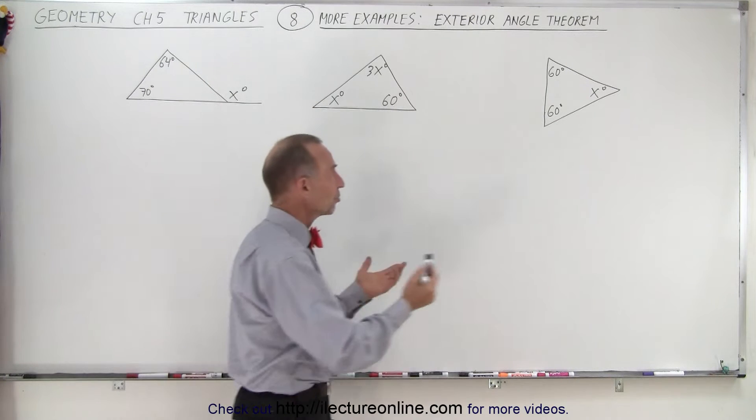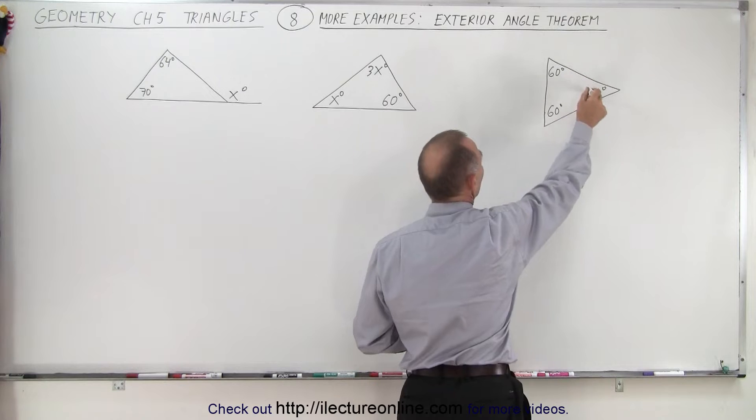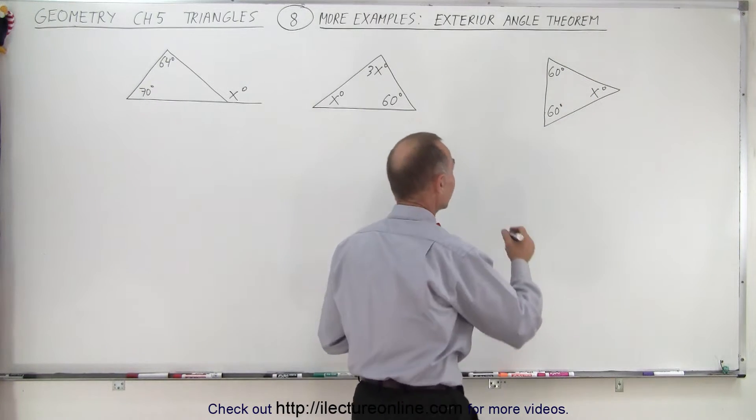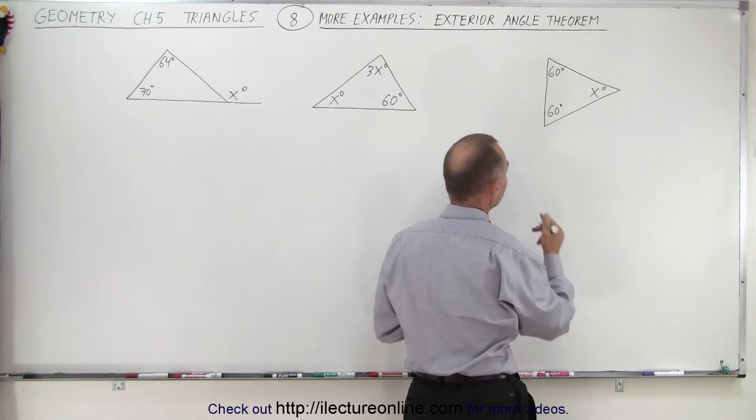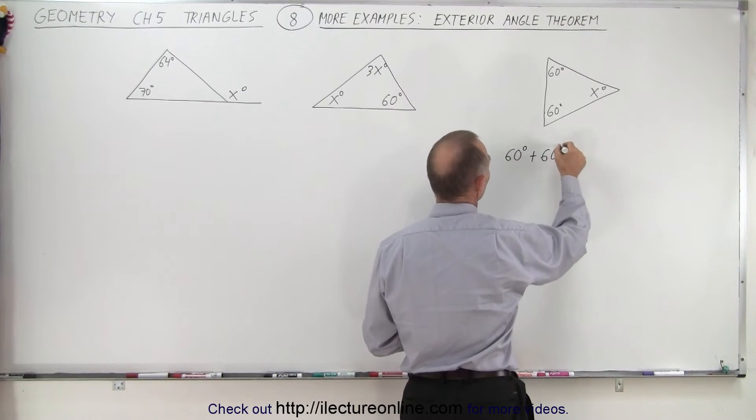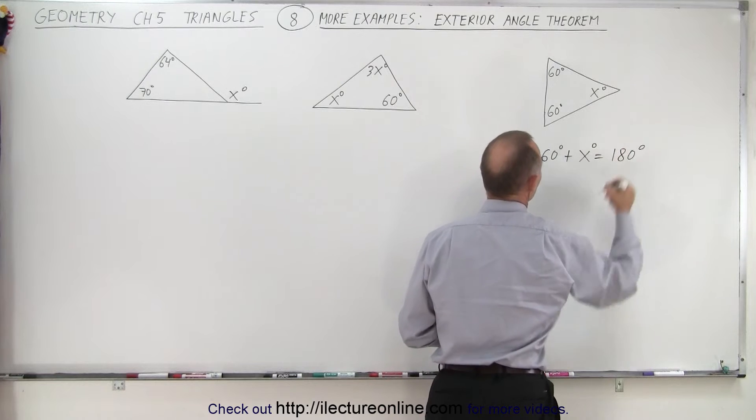Here we're given a triangle with three angles of 60 degrees, 60 degrees, and x degrees, and we're trying to find the value for x. So here we can say that the sum of the measure of the angles must add up to 180 degrees, which means that 60 degrees plus 60 degrees plus x degrees must add up to 180 degrees.